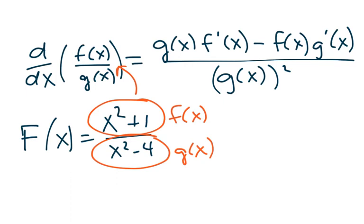So if that's my f of x, then f prime of x would be the derivative of that, so the derivative of x squared plus 1 is just 2x. And then I'm going to find the derivative of g of x, which is the bottom part. So if I take the derivative of x squared minus 4, I also get 2x. I'm going to use this notation here to help me fill out the rest.